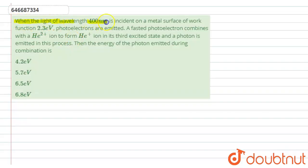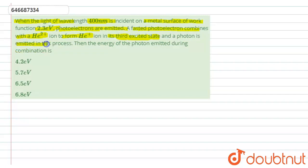The question is: when light of wavelength 400 nanometers is incident on a metal surface of work function 2.3 electron volt, photoelectrons are emitted. The fastest photoelectron combines with a He²⁺ ion to form the He⁺ ion in its third excited state, and a photon is emitted in this process. Find the energy of the photon emitted during combination.